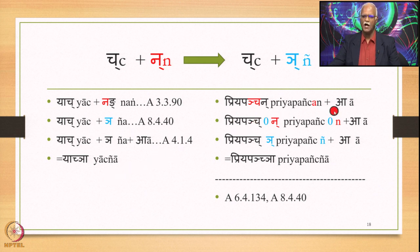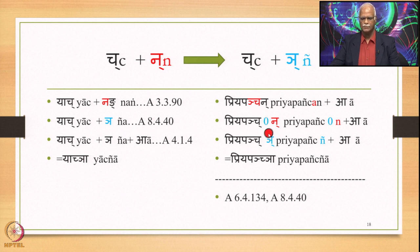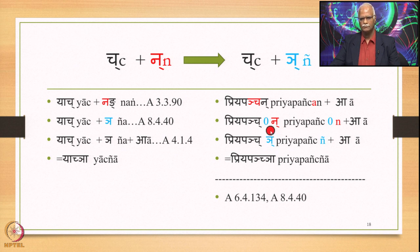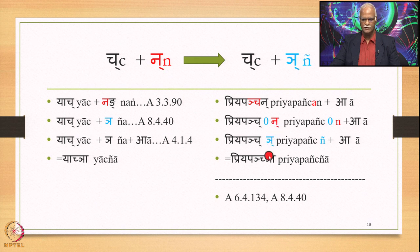Similarly, we have Priyapanchan plus A, deriving the instrumental singular of Priyapanchan. Now 6.4.134 comes into play and replaces this A by zero, so we get Priyapanchan, Na, and A. In the absence of this A, Chuhu comes into close contact with Na. This is Shchuhu, this is Stuhu, and Stoshchunashchuhu applies with the Purvanimittaka, and therefore this Na is substituted by Yen, which is the fifth sound in Chavarga. So we have Priyapanchan and A — Priyapanchan.